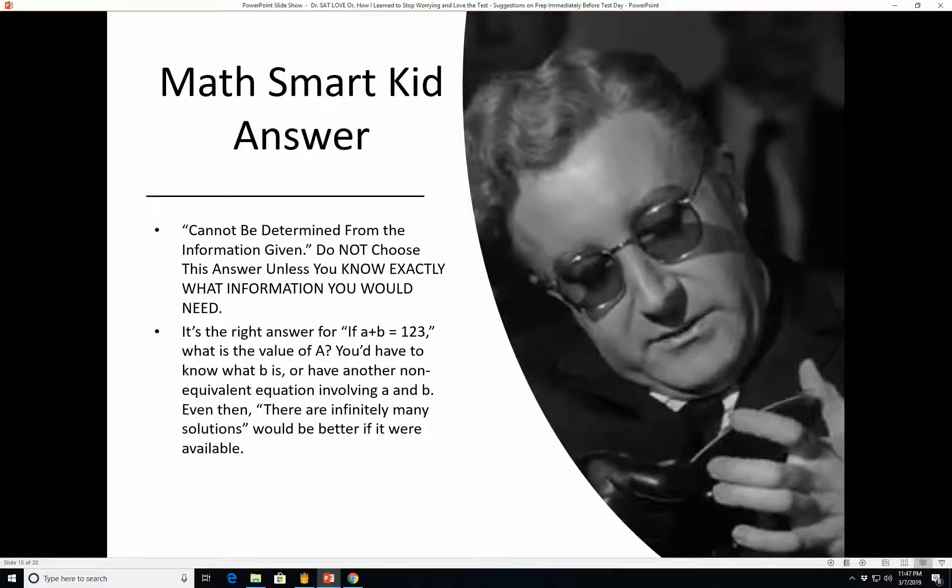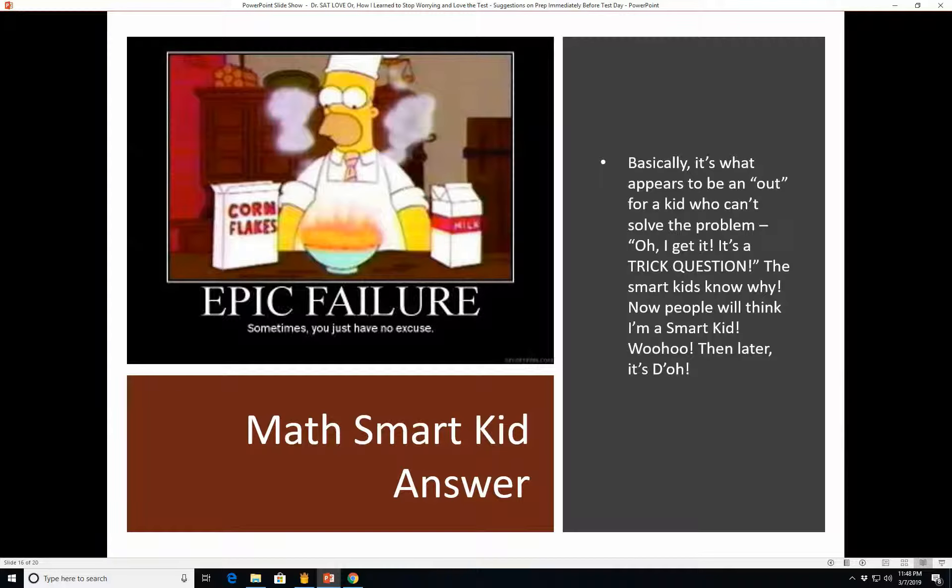Okay, the math smart kid answer is cannot be determined from the information given. Do not choose this answer unless you know exactly what information you would need. So it would be the right answer for something like, if a plus b equals 123, what's the value of a? You'd have to know what b is, or you'd have to have another non-equivalent equation. You know, it can't be 2a plus 2b equals 246. That's just multiplying both sides by 2. You have to have a non-equivalent equation involving a and b. Even then, for this one, there are infinitely many solutions would be a better choice if it were available. So be afraid, be very afraid, do not choose, cannot be determined from the information given for any SAT math problem unless you know exactly why you cannot determine it from the information given. So, okay, basically it just appears to be an out for a kid who can't solve the problem. He's going to say, oh, I get it. It's a trick question. The smart kids know why. So now people will think I'm a smart kid. So then he goes, woohoo. Then later it's, don't. So don't be a Homer.